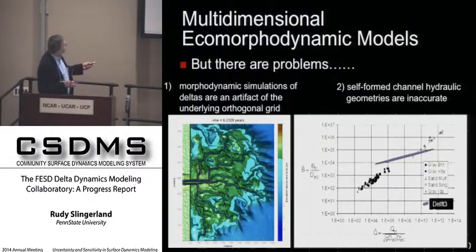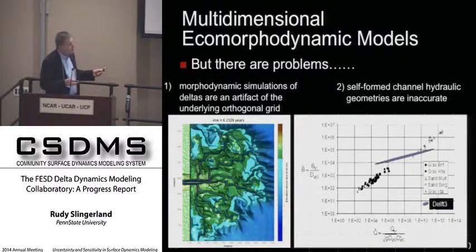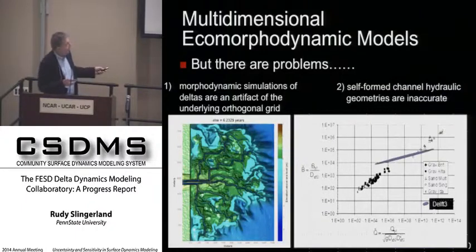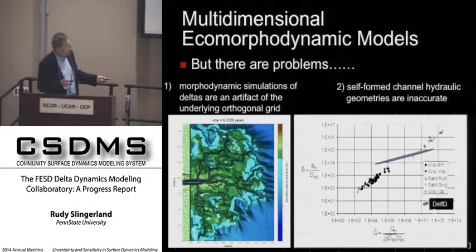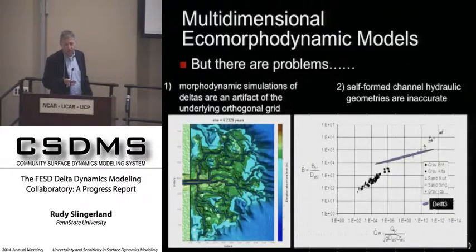This is a really good vetted engineering model, but it has problems — particularly for building morphodynamic deltas. Problem number one: simulations can be a strong artifact of the underlying grid structure. You get right-angle bends in distributaries of the final delta form, which is an artifact of the grid. Problem number two: the channels should be hydraulically similar to real channels. On a Gary Parker non-dimensional plot of bankfull width scaled by grain size versus bankfull discharge, Delft has larger widths for larger discharges, but the slope isn't right.